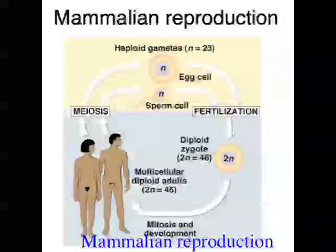Once the egg is fertilized with the sperm, new cells start to form via mitosis - just regular cell replication. One cell becomes two, two becomes four, four becomes eight, eight becomes sixteen, sixteen becomes thirty-two. Then that fertilized cell is known as a blastocyst - a little ball of cells. It then adheres to the uterus of the female, and then a body plan starts to form.